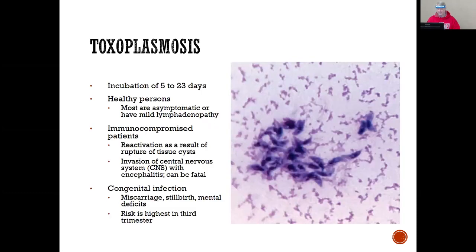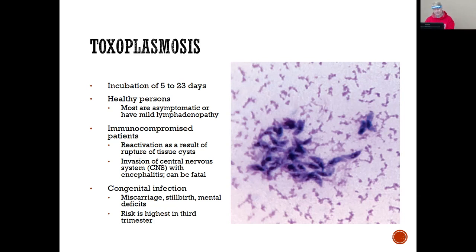The incubation is five to 23 days. Healthy people are usually asymptomatic or have mild lymphadenopathy. For the immunocompromised patient, there is a reactivation as a result of rupture of a tissue cyst — it invades the central nervous system and causes encephalitis that can be fatal. We've definitely seen that in our immunocompromised patients.